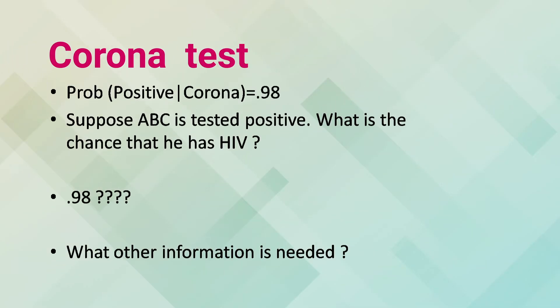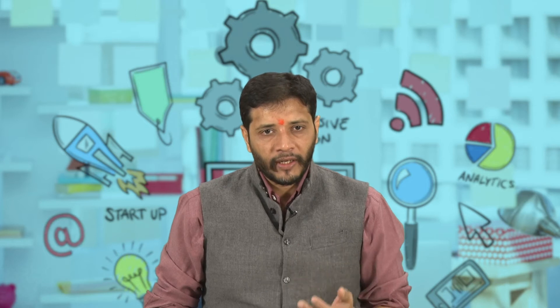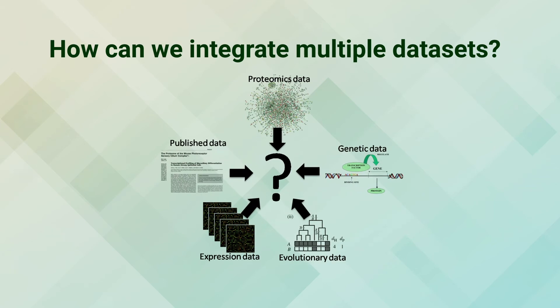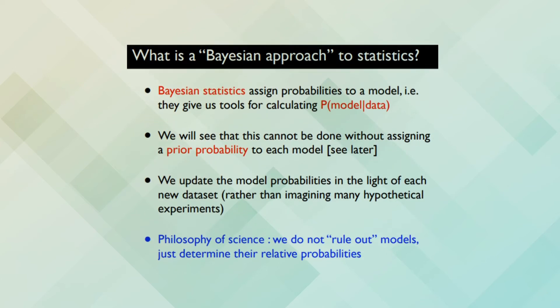Let us take an example. Since we are going through the pandemic stage, suppose the probability of a positive corona test is 0.98. If person ABC tests positive, what is the chance that he has the infection? What other information is needed? This is where we need to integrate multiple data sets — published data, genetic data, expression data, and evolutionary data. This leads us to the Bayesian approach to statistics.